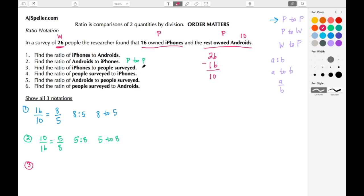Well, this here is a part for the iPhones to a whole, which is everyone surveyed. So the number of iPhone users is 16, the number of people in the survey is 26. Again, we have even numbers so we can take half of them. Half of 16 is 8 and half of 26 is 13. This can be rewritten as 8 colon 13 and also as 8 to 13.